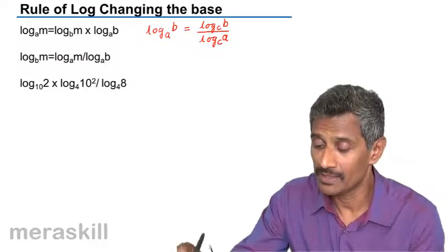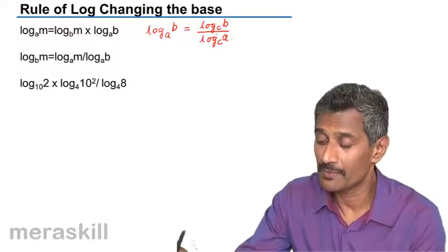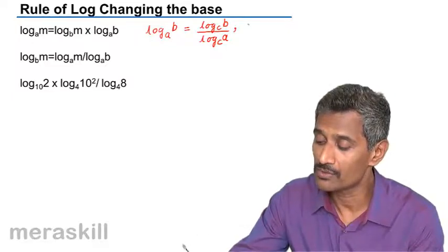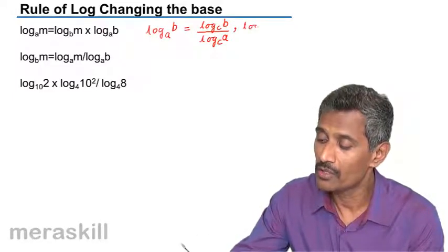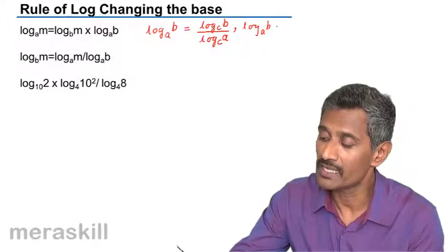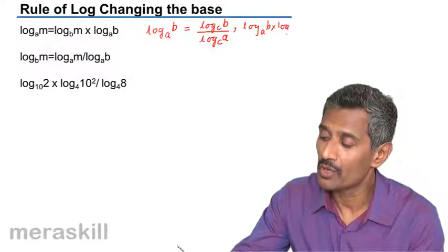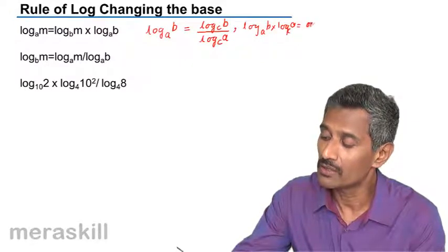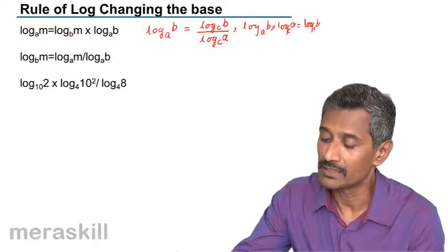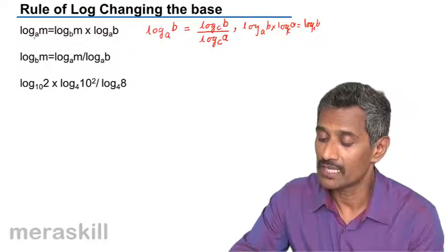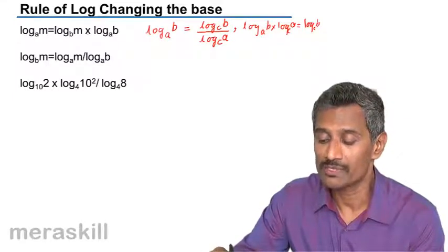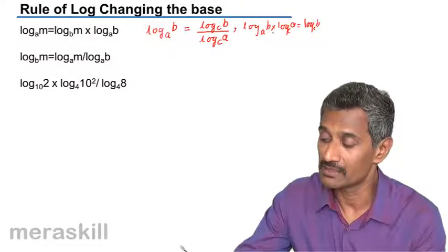In other words, if you cross multiply you get the same thing. Log M to the base A. If you draw the parallels, log B to the base A into log A to the base C is nothing but log B to the base C. So if you see the same principle: log M to the base A is equal to log M to the base B into log B to the base A.